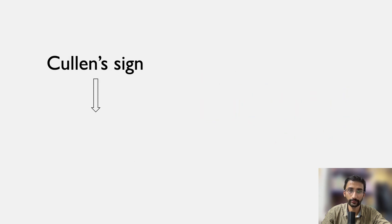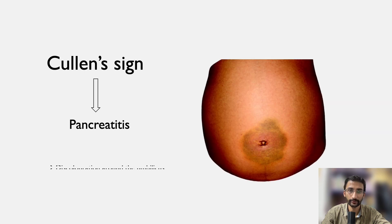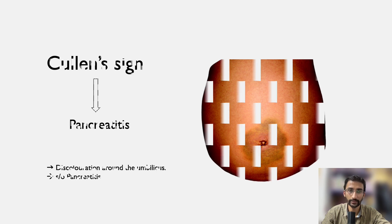Cullen's sign is seen in case of pancreatitis. It presents as discoloration around the umbilicus, which is suggestive of pancreatitis.